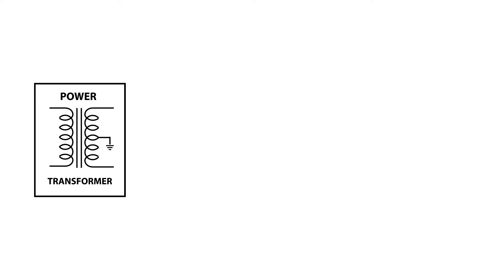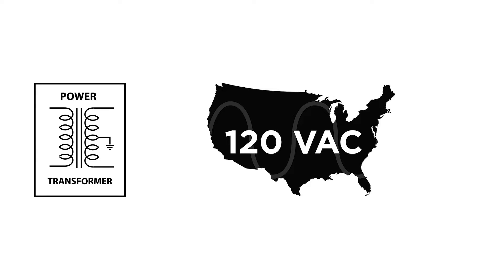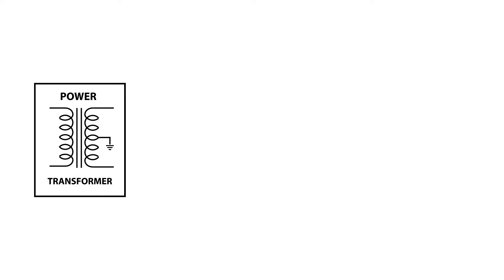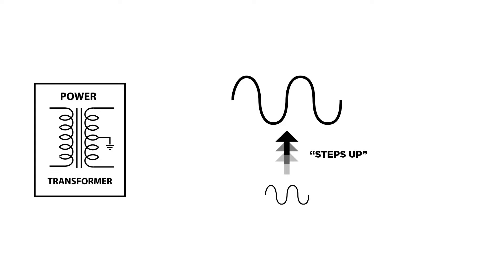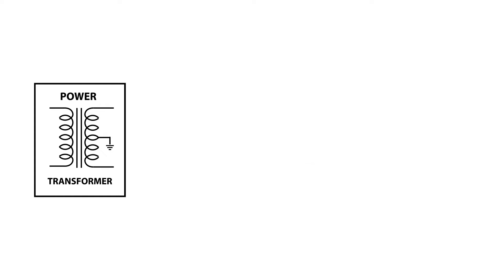To get into rectification and what it actually does in the power supply, we have to start at the beginning. The very first component is the power transformer. As you can see in this graphic, the left side shows the primaries — that's what's coming out of the wall. Your typical AC voltage in the US is about 120 volts AC. On the right side, you have the secondaries, which step up the voltage to the high voltage needed for the amplifier to operate. However, it is still AC and not the DC voltage we need just yet.